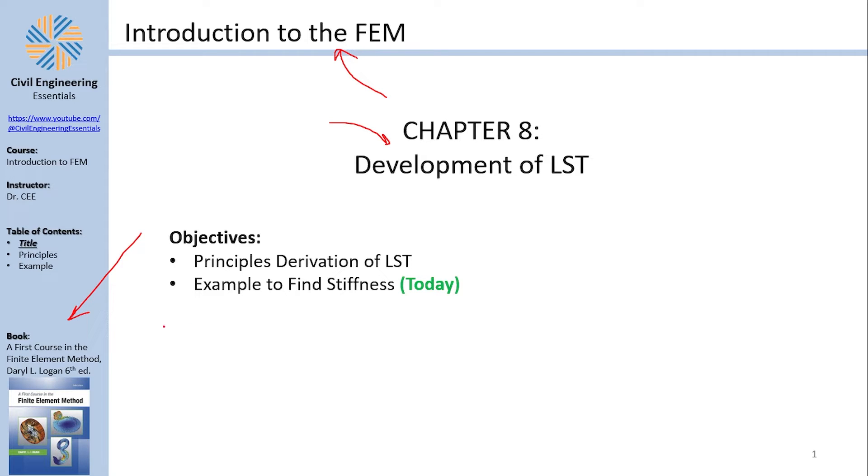In today's video, we are going to go through an example where we try to partially derive the stiffness matrix of a Linear Strain Triangle. I'm saying partially because we are not going to entirely derive the stiffness matrix, neither me nor the reference does that, and I will tell you about my thoughts why this happens during the video. So with that being said, and without further ado, sit back, relax, and enjoy the show.